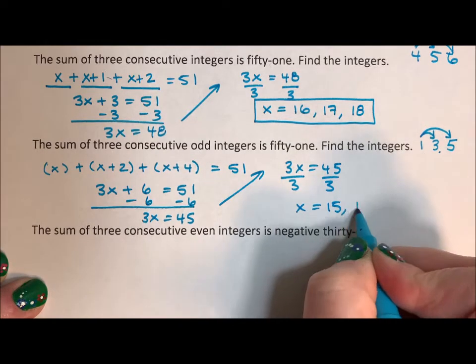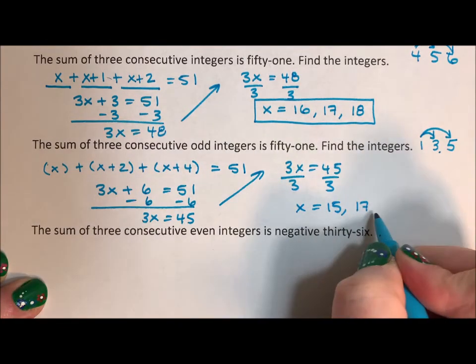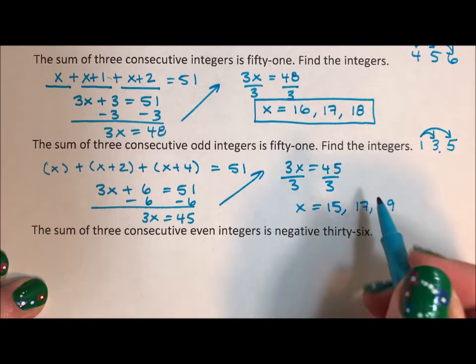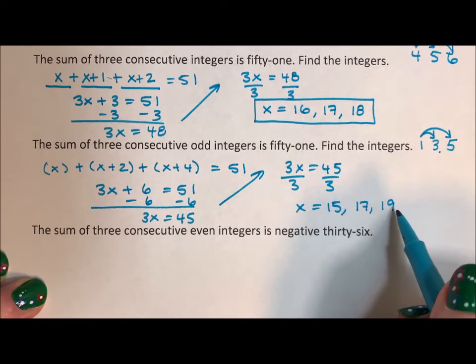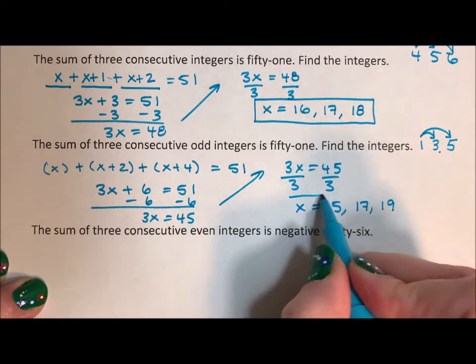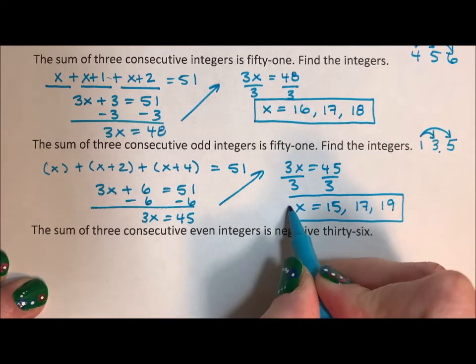15 plus two is 17. 15 plus four is 19. And then I check: is 15 plus 17 plus 19 equal to 51? It is. There we go.